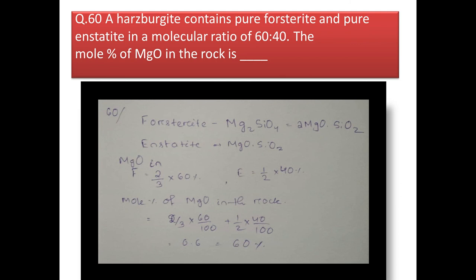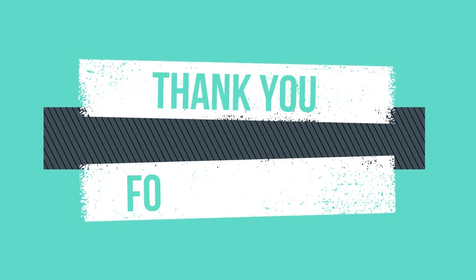The last question: a harzburgite contains pure forsterite and pure enstatite in a molecular ratio of 60:40. Find the mole percentage of MgO in the rock. The formula of forsterite is Mg₂SiO₄ — breaking down: 2 moles MgO + 1 mole SiO₂. Enstatite is MgSiO₃ — 1 mole MgO + 1 mole SiO₂. In forsterite, MgO mole% = 2/3 × 60 = 40%. In enstatite = 1/2 × 40 = 20%. The total mole percentage of MgO in the rock = 60%.